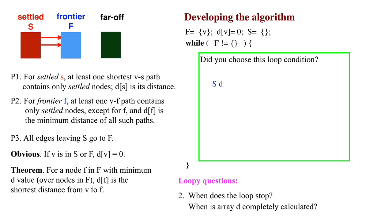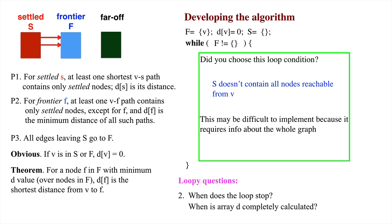You might have chosen the loop condition: the settled set doesn't contain all nodes reachable from v. This condition may be much harder to implement than the one we chose, because it may be difficult to determine the number of reachable nodes.